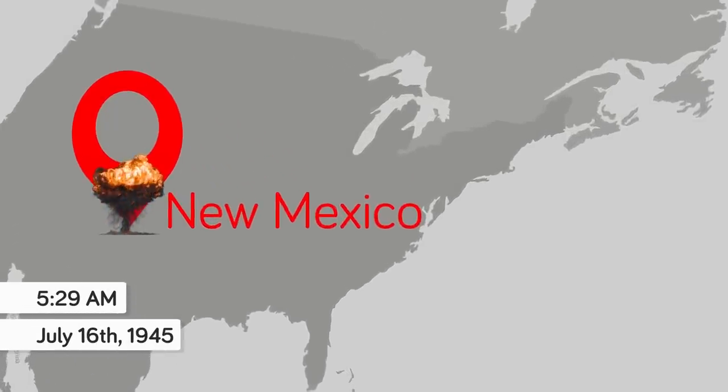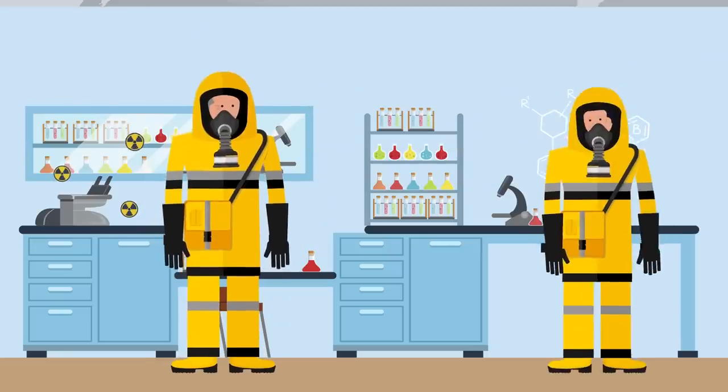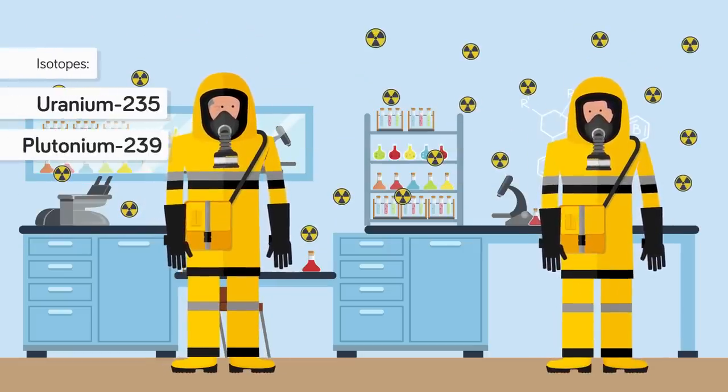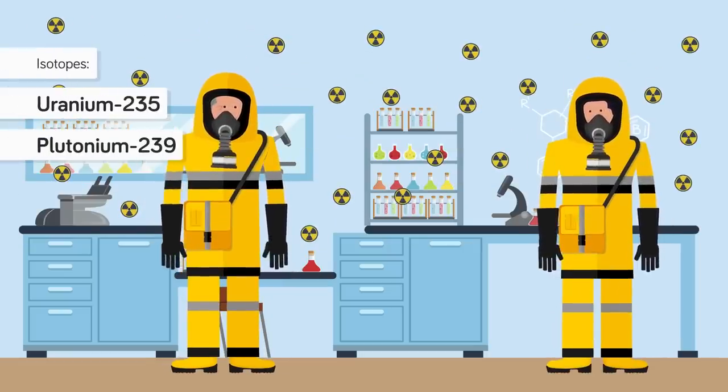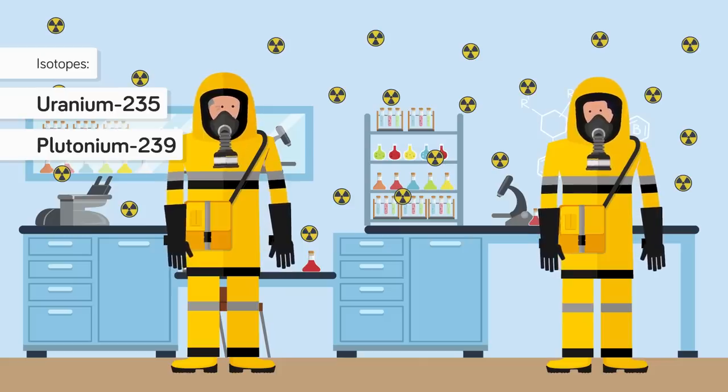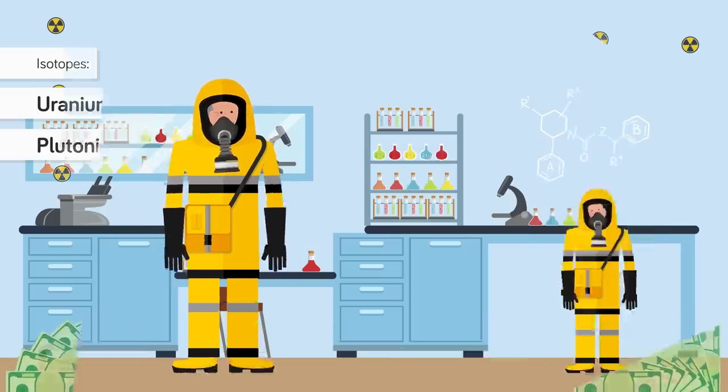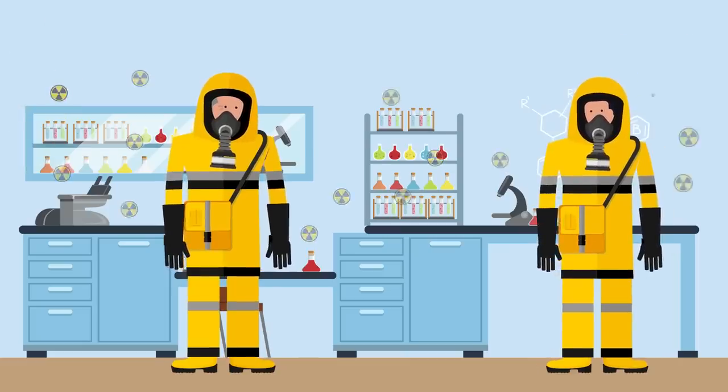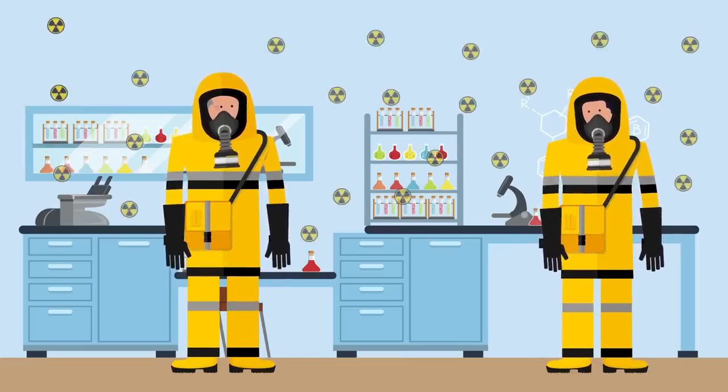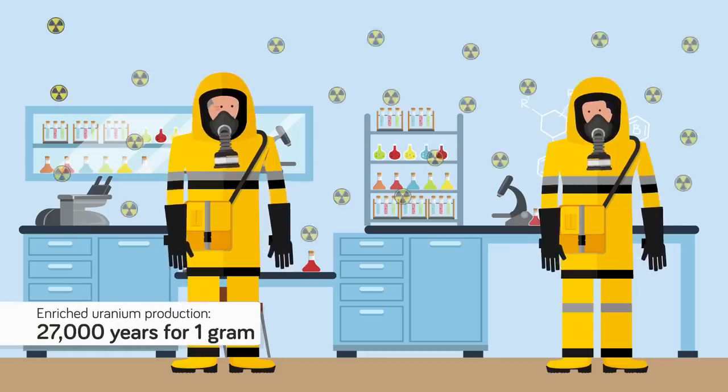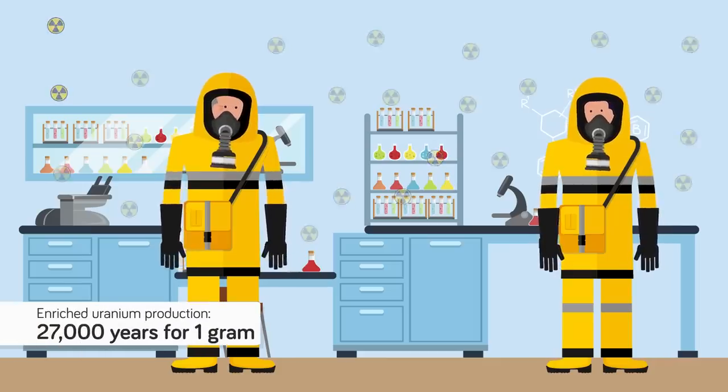27. The first detonation of a nuclear weapon in history was at 5:29 a.m. on July 16, 1945, in New Mexico. 26. Producing the fissile isotopes uranium-235 and plutonium-239 for use in just a few bombs was so difficult that it took up 80% of the entire Manhattan Project's budget. 25. Without the technological breakthroughs of the Manhattan Project, producing just one gram of enriched uranium would have taken 27,000 years. Maybe it would have been best if they had failed.